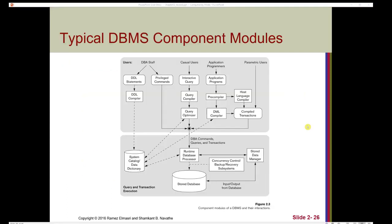Here is a visual representation of how different types of users communicate with the stored database. On the lower level, you can see the components of the database and the systems used to communicate with it at a low level. In the upper part of the diagram, you can see the different types of users connecting to the database through the DBMS. The database administrative staff can use both the DDL and privileged commands to communicate with the database. Casual users will use interactive queries, application programmers will use the DML through applications, and parametric users can use a collection of compiled transactions.